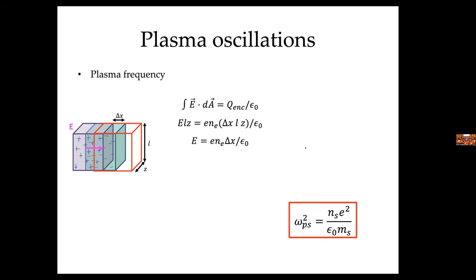Using Newton's second law, we calculate what happens to a particle subject to that electric field. The δx is the displacement for a given particle oscillating back and forth as a result of the electric field, which also changes as δx changes. It's a coupled problem: the electric field depends on the amount of disturbance, and the amount of disturbance depends on the electric field.